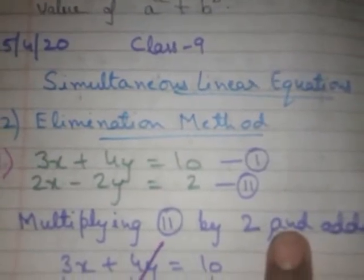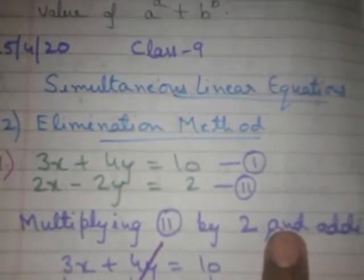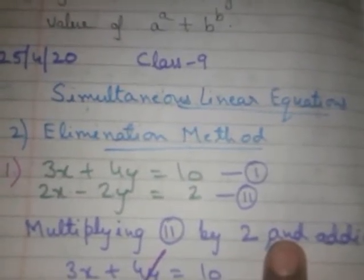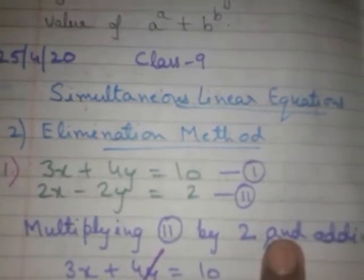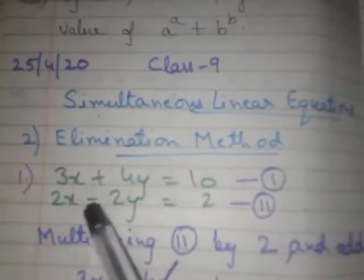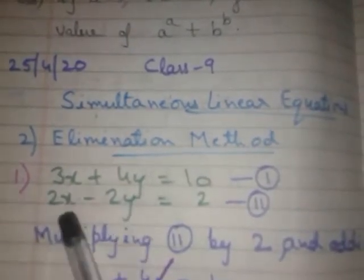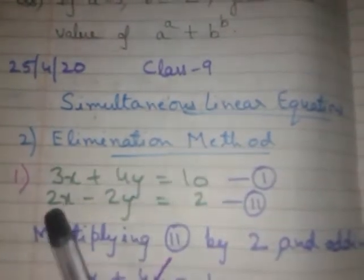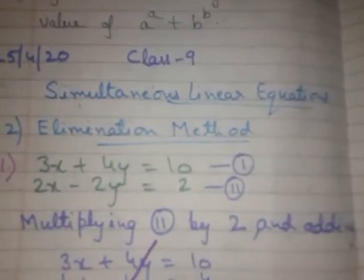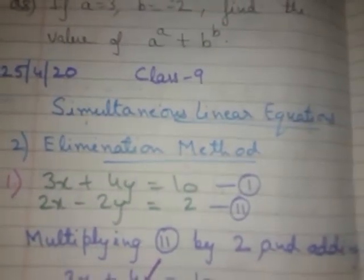Now, elimination — what does the name suggest? Eliminate. It is the noun form of eliminate. Eliminate means to remove, to eradicate something. So, according to the name, what are we going to do here? We are going to eliminate one of the variables. We will eliminate one of the variables so that we have only one variable left, find its value first, and then find the value of the second variable.